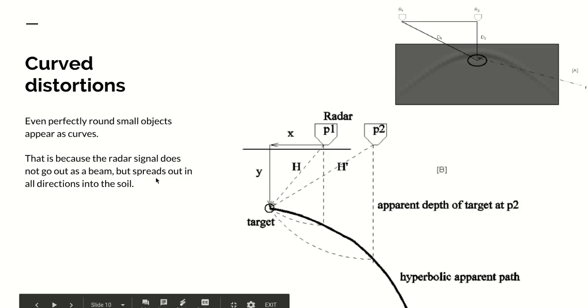As a result of this even perfectly small round objects appear as distributed curves. Now why is this? Suppose I'm in this position here directly above an object. Well I'll get an echo back at a depth y.